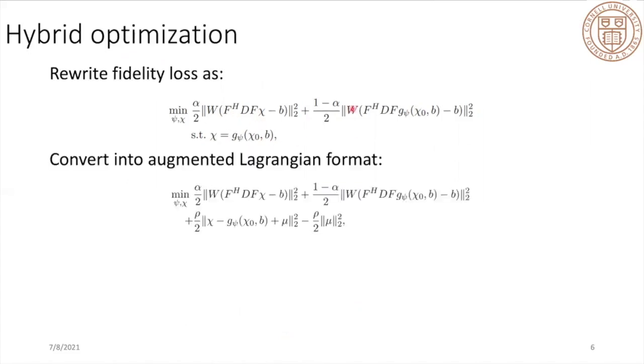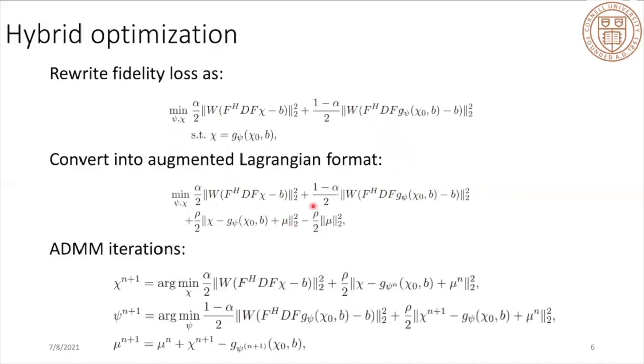After this two-step pre-training, we propose this hybrid optimization as follows. First, let's rewrite the fidelity loss as this equation, where we have a splitting parameter R to get these two terms with this constraint where we impose chi equals the second network output. After that, we convert this loss function into augmented Lagrangian format. We use ADMM to optimize both the susceptibility and theta.